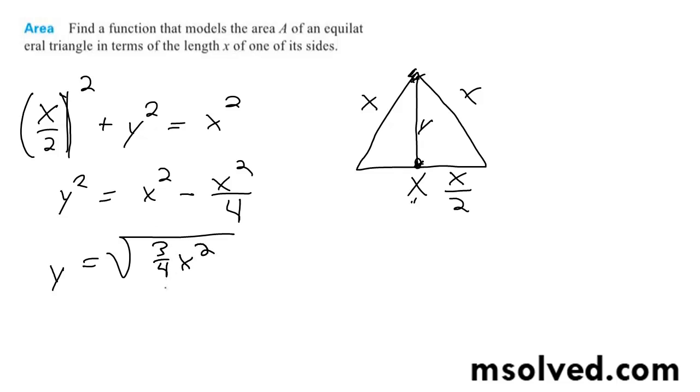Alright, so all the area is then is just going to be this value times x over 2, and that's it.